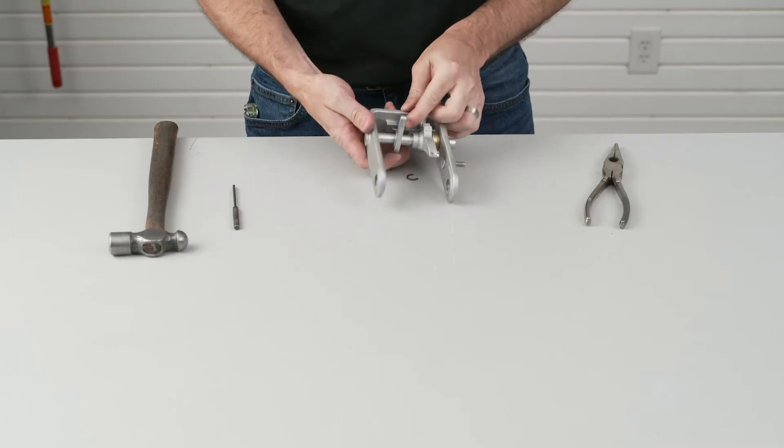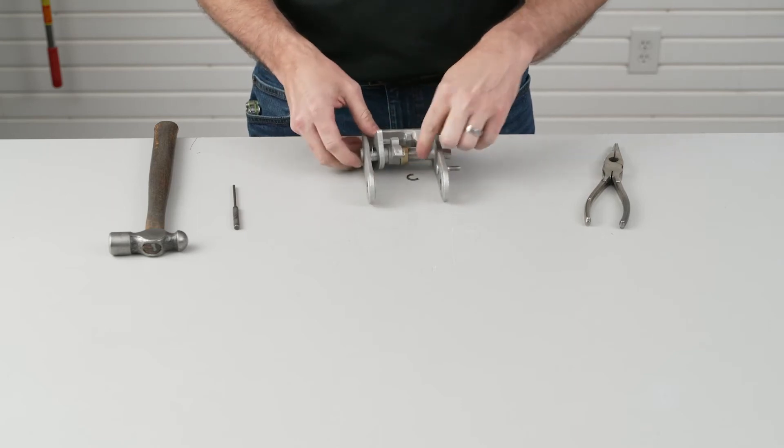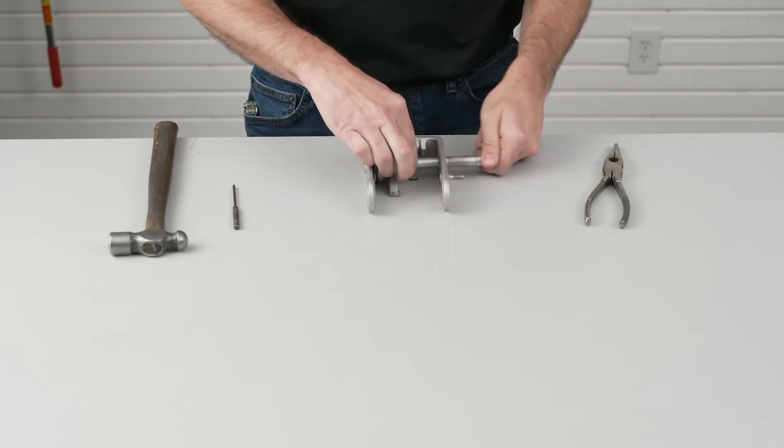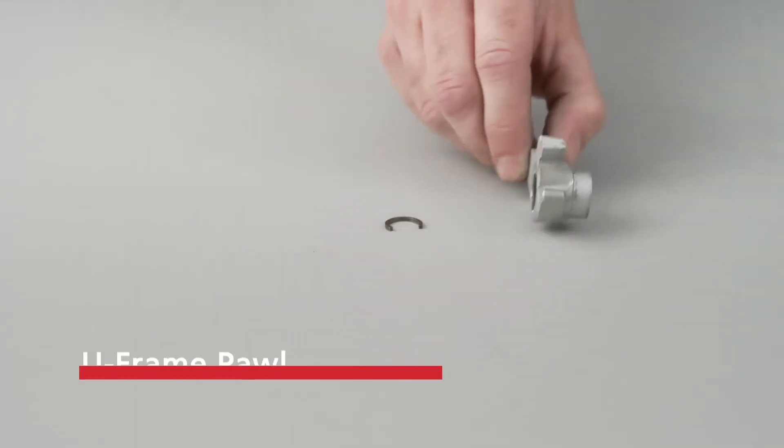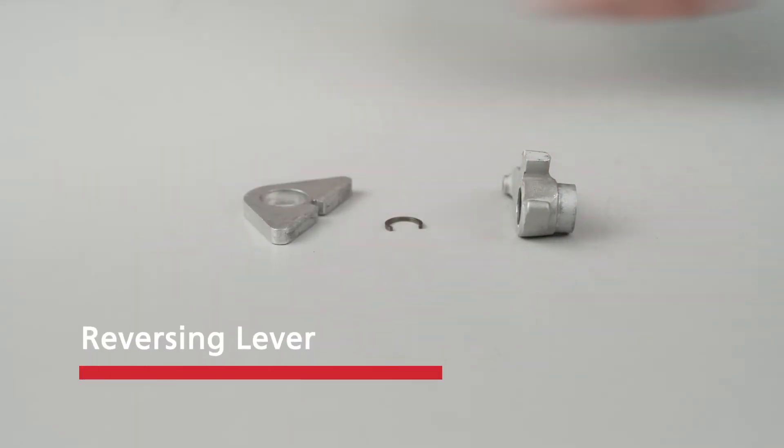Remove the U-Frame Pawl Shaft and the other components from the U-Frame. Discard the C-Clip, U-Frame Pawl, Reversing Lever, Flat Washer, and U-Frame Pawl Shaft.